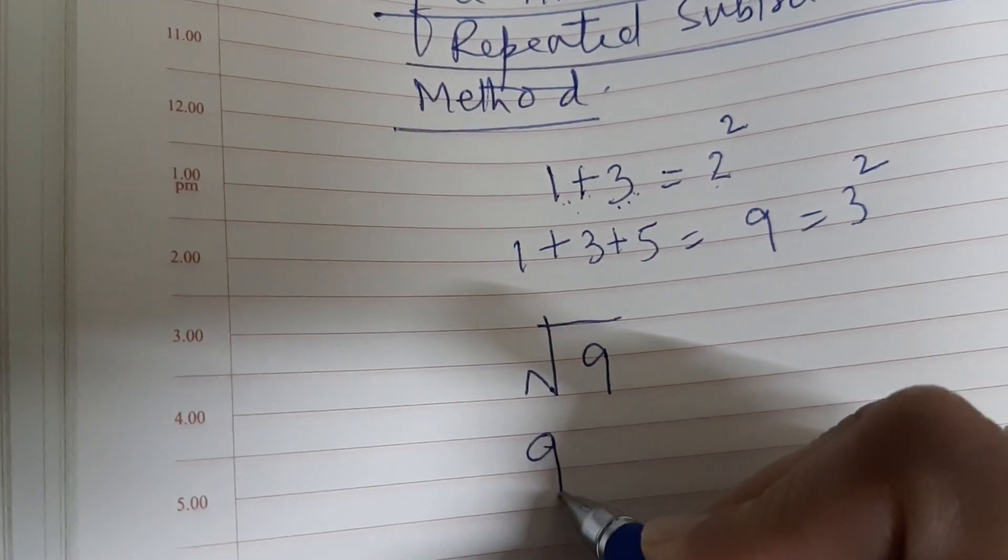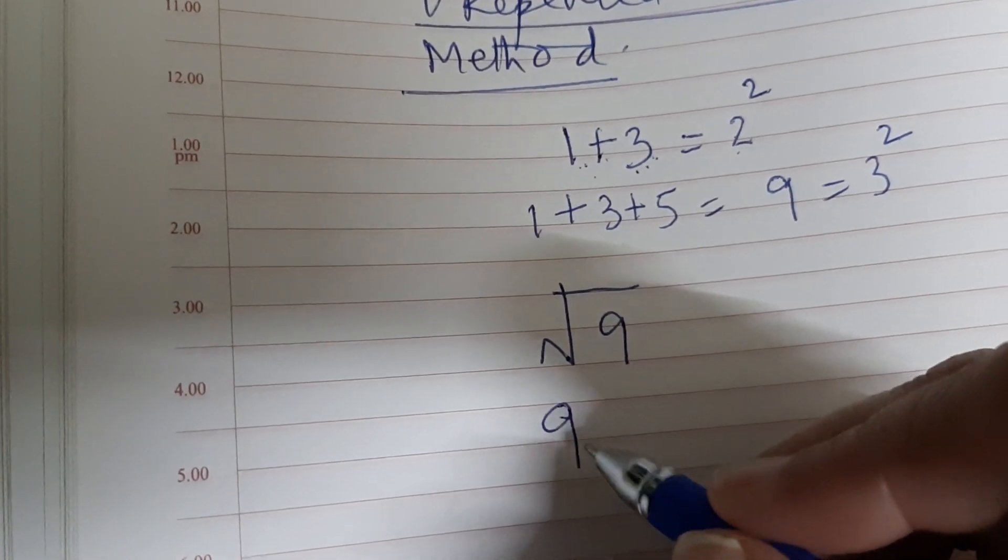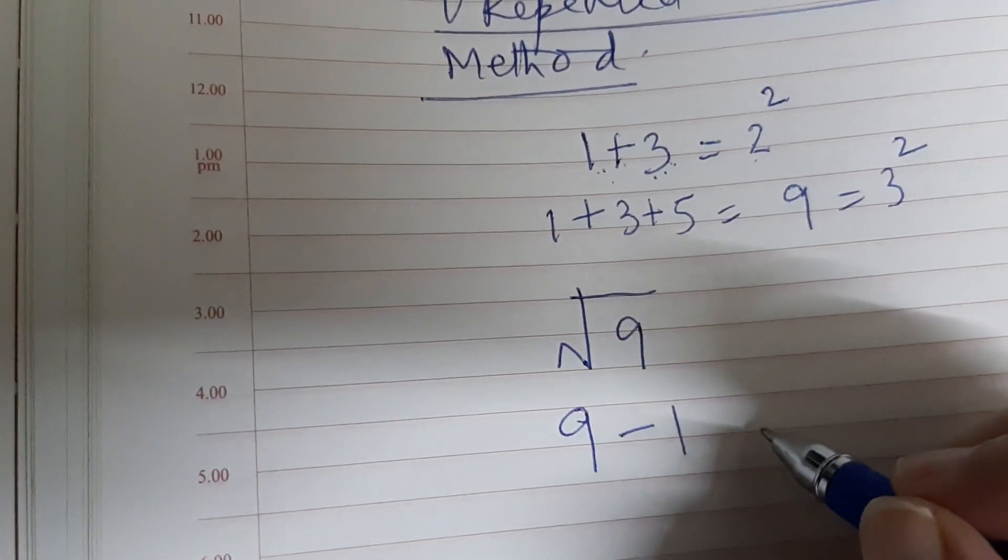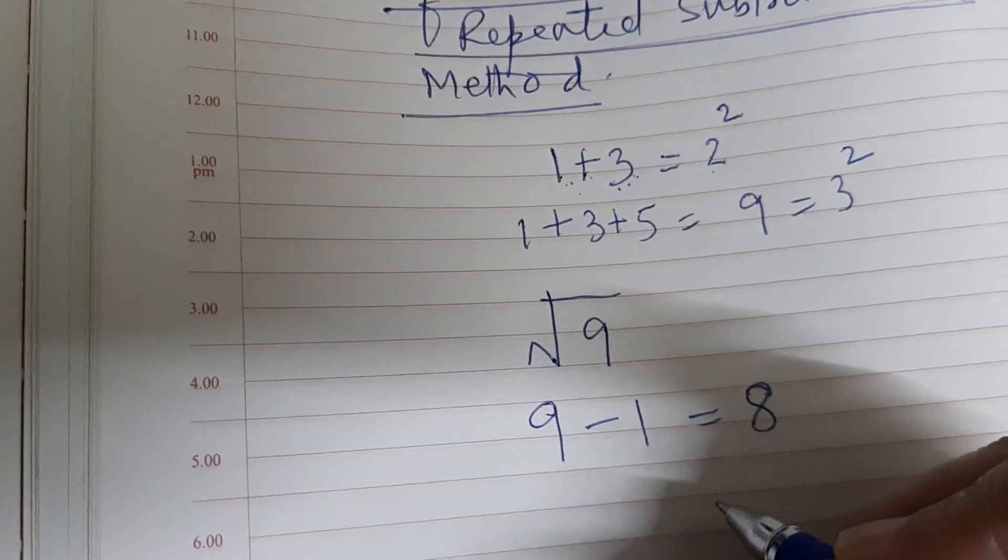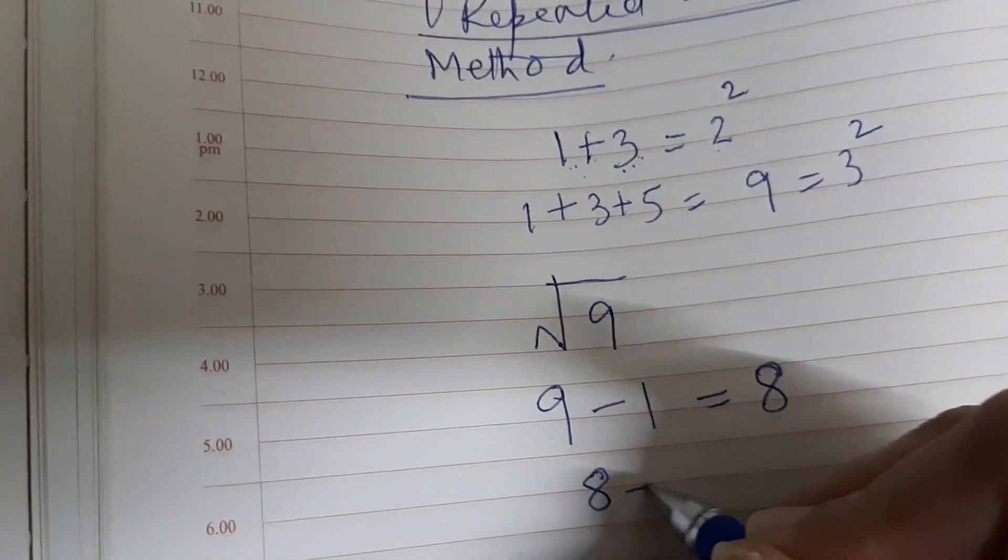So 9 minus 1 equals 8. Now take the number 8 and subtract from it the next odd number, which is 3. So 8 minus 3 equals 5.